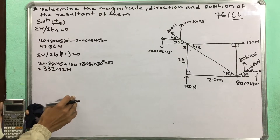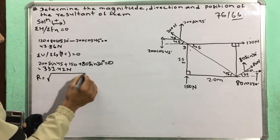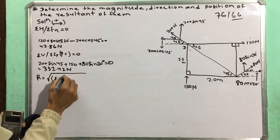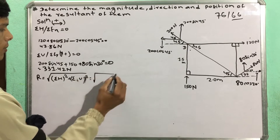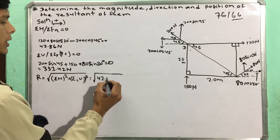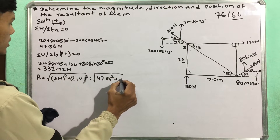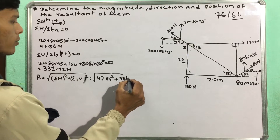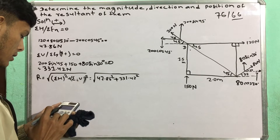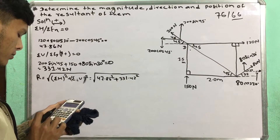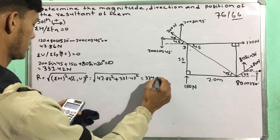Now we calculate the horizontal force and vertical force. The resultant is the square root of horizontal force squared plus vertical force squared: 47.86 squared plus 301.42 squared, giving 334.85 Newton.